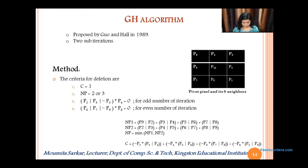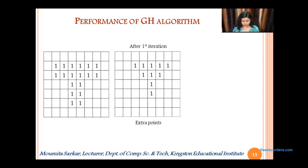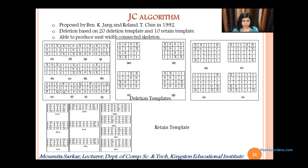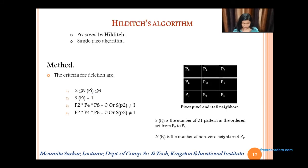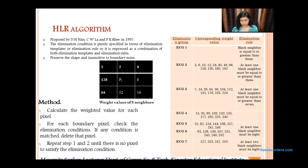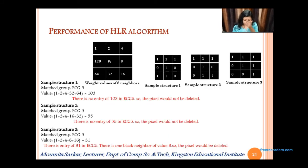We have the GH algorithm. This is its performance — after the first iteration you can find some extra points, and after the second iteration it breaks the connectivity. We have the JC algorithm, which depends on deletion and refilling templates. We have the HALS algorithm, which can produce a connected 1-pixel-wide image, but 2-pixel wide slant lines and 2×2 squares will be completely erased. We have the PESH algorithm, which uses some connectivity values. We have the HLR algorithm, which divides pixels into different elimination groups with assigned weight stage values; you can see its performance here.